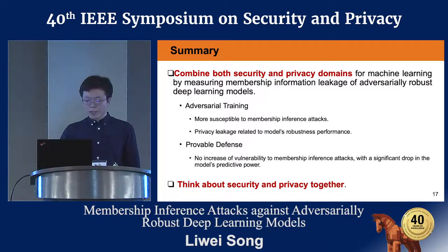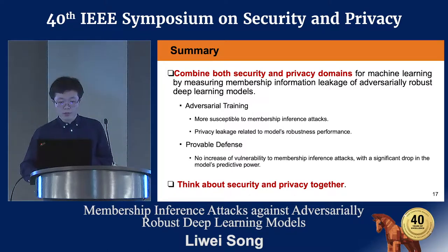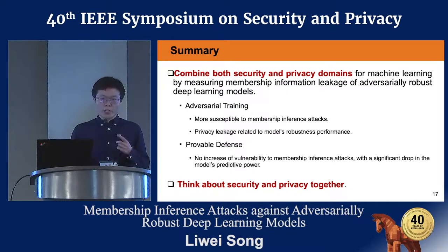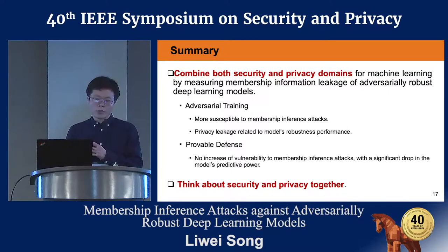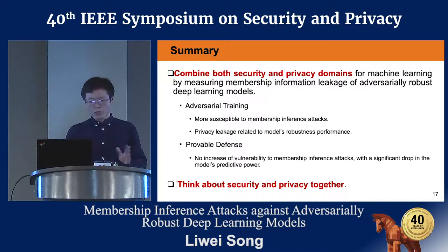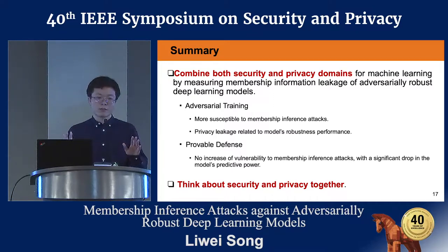To summarize today's talk: we combine security and privacy together for machine learning models by evaluating the membership inference risk of adversarially robust deep learning models. Among the two defense methods, adversarial training increases privacy risk against membership inference, and the privacy leakage is related to the model's adversarial perturbation constraints. For provable defense, we don't observe increased membership inference risk, but that comes with a drop in model accuracy. Finally, we suggest we need to think about security and privacy together.